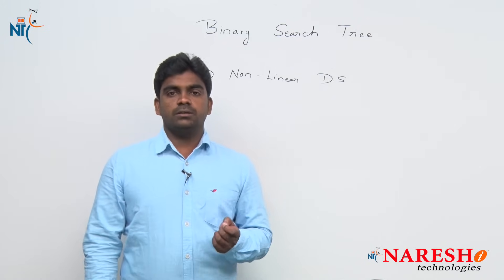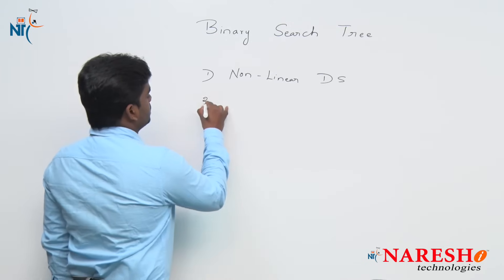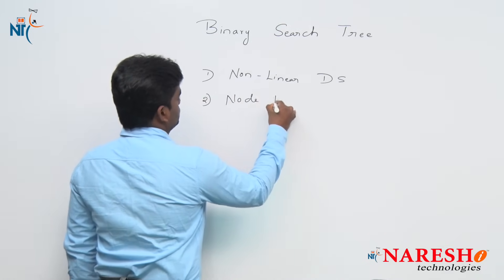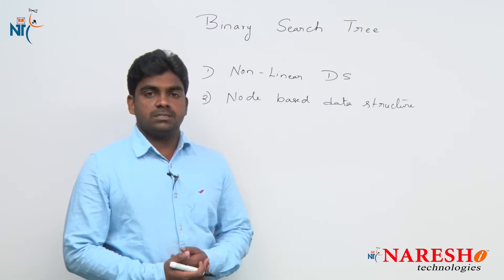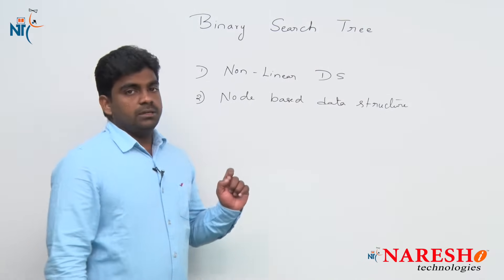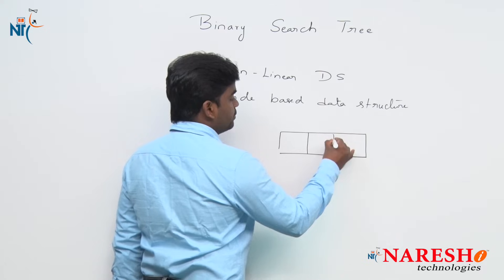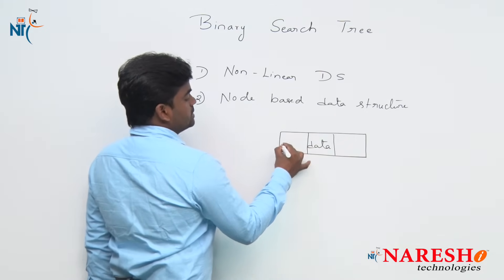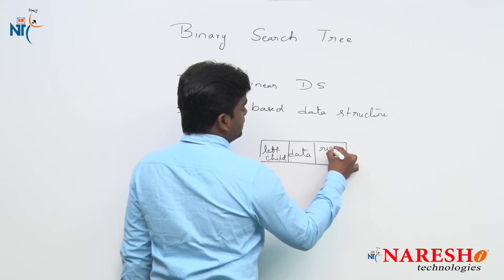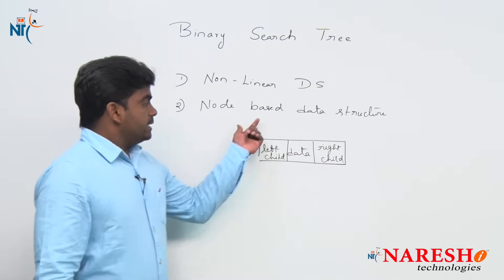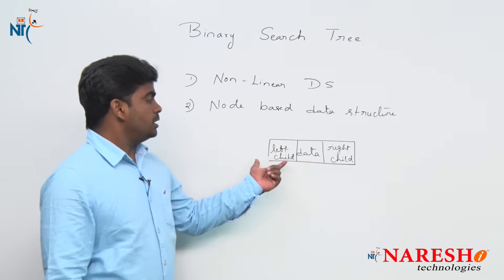What is a node? We already know from single linked list and double linked list operations. This is a node-based data structure. In a binary search tree, a node has a minimum of three fields: one is a data field, second one is a left child, and third one is a right child. So at most it has three fields — this is the node data structure.